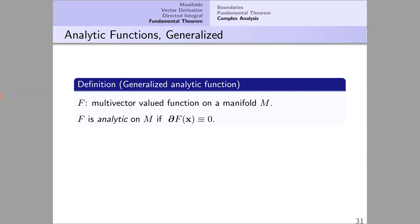Here's the definition of an analytic function on a manifold. F is some multi-vector valued function on the manifold and it's called analytic if its vector derivative is zero. Now this truly is a generalization of the ordinary definition of an analytic function in a plane because in a plane this condition is exactly the same as saying that the function satisfies the Cauchy-Riemann equations which are equivalent to f being an analytic function.